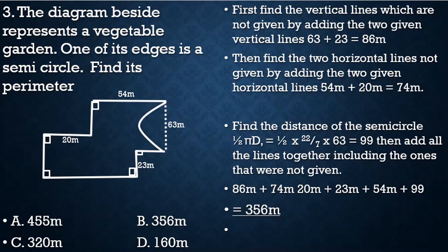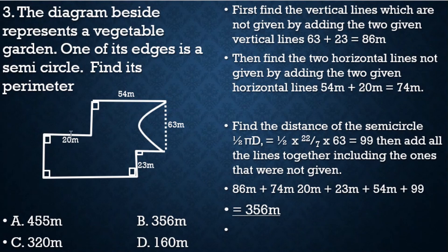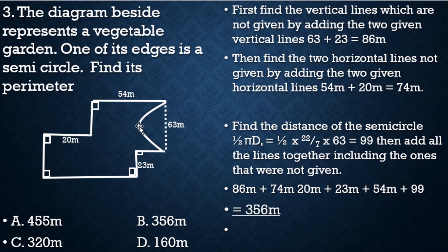The diagram represents a vegetable garden. One of its edges is a semicircle. Find its perimeter. Perimeter means the distance all the way around. We need to find all lines which are not given, then add them, and also add the half πD for the curved part. First, find the vertical lines which are not given.